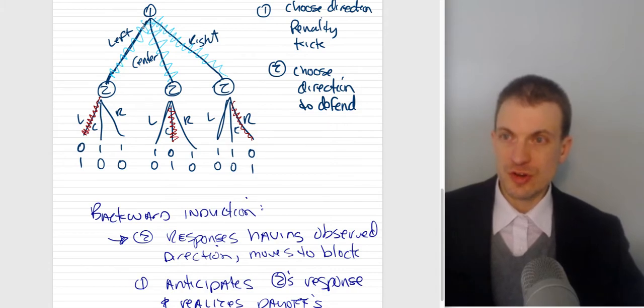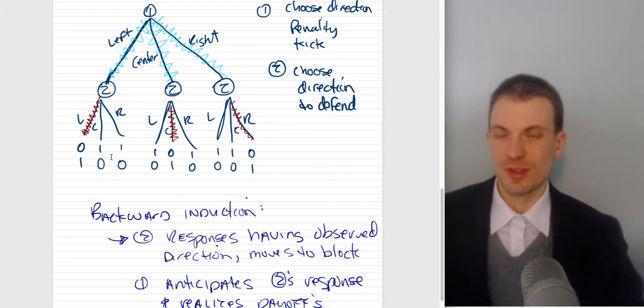Go to the end of the game and player two responds having observed the direction and then moves to block. So conditional on observing that player one has kicked left, the defender is going to defend left. Their payoff is going to be one. The person kicking is going to get zero. However, if they were to make a mistake and defend center, a goal would be scored and that would go to player one's team. Or if they had gone right, a goal would be scored and that goal would go to player one's team and zero for the keep who had missed the block.